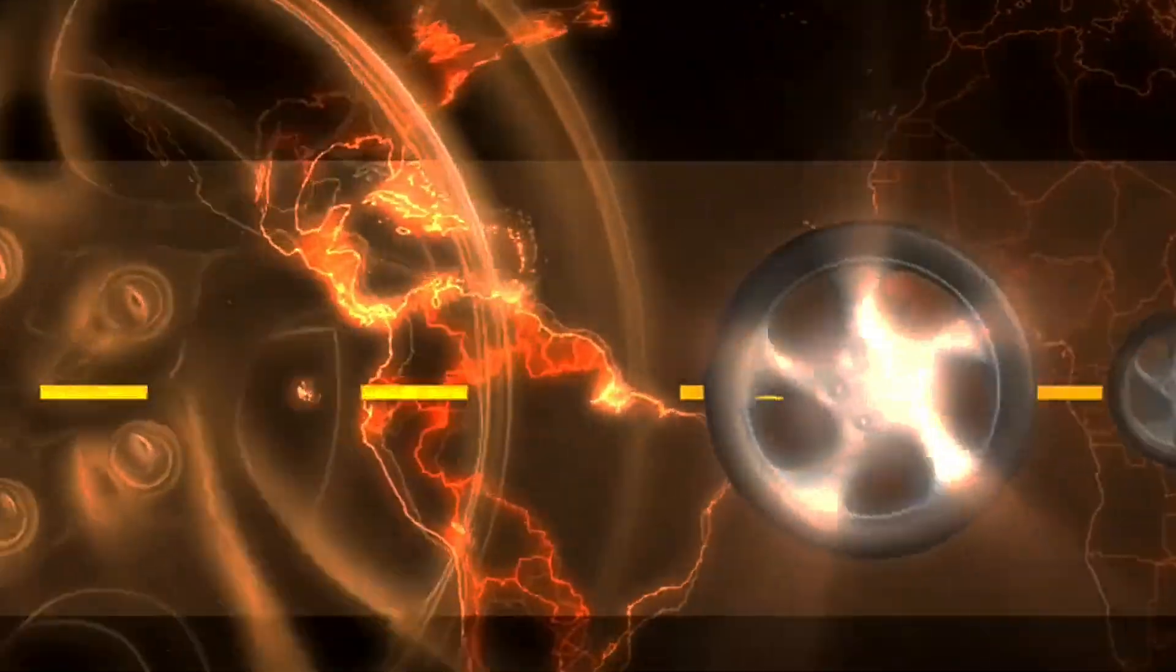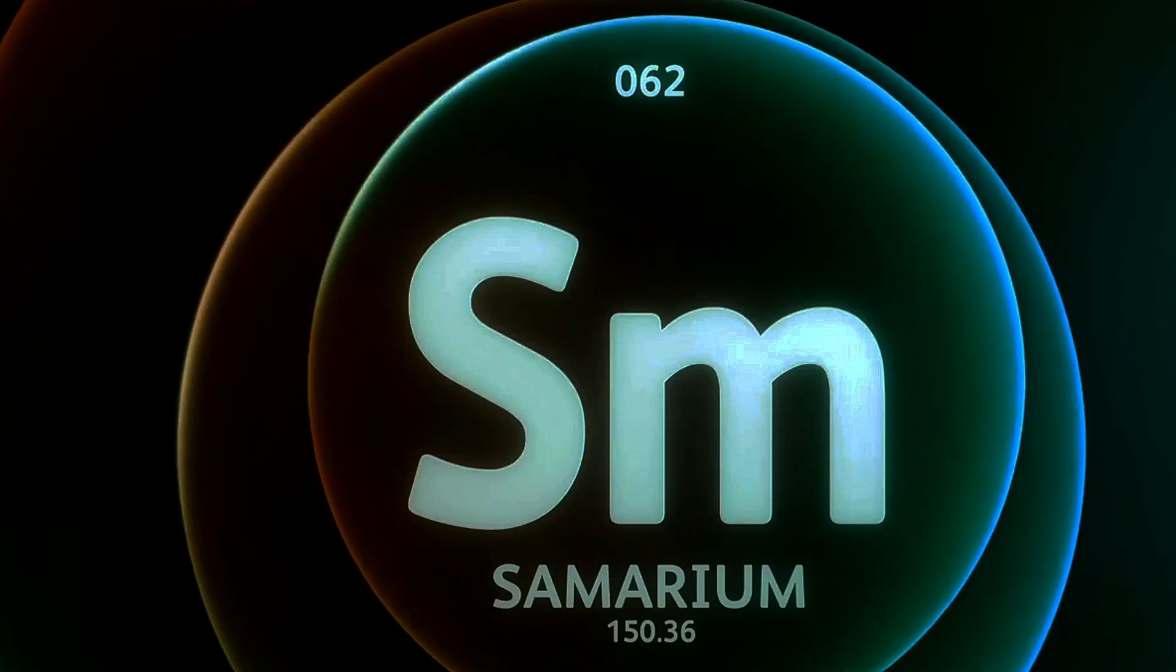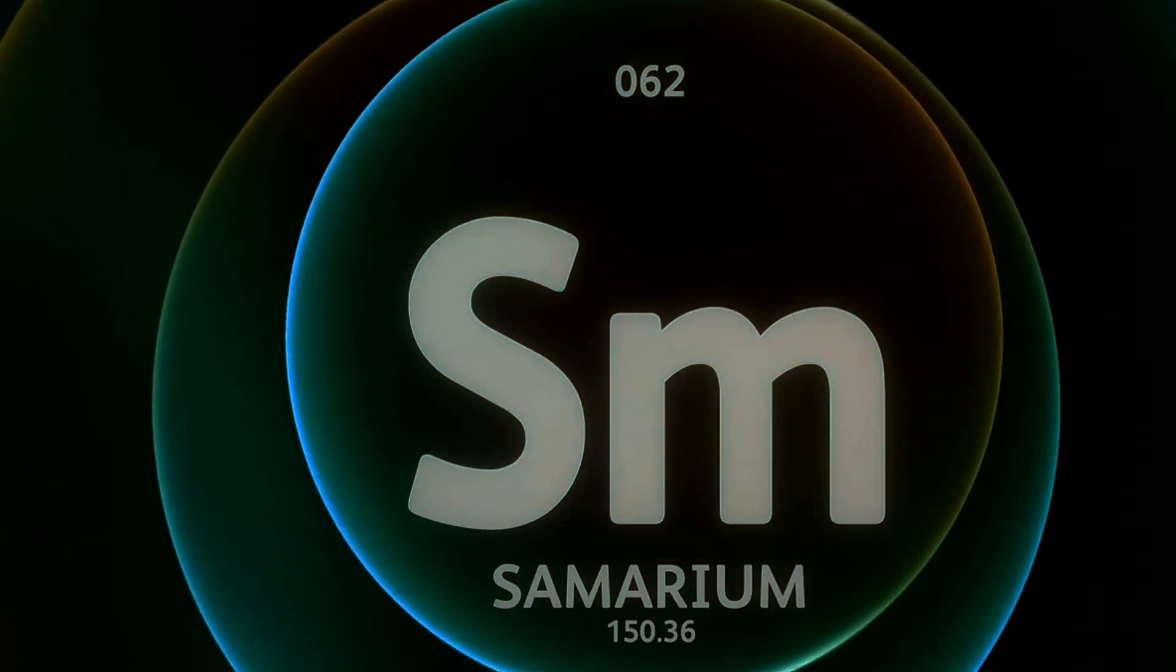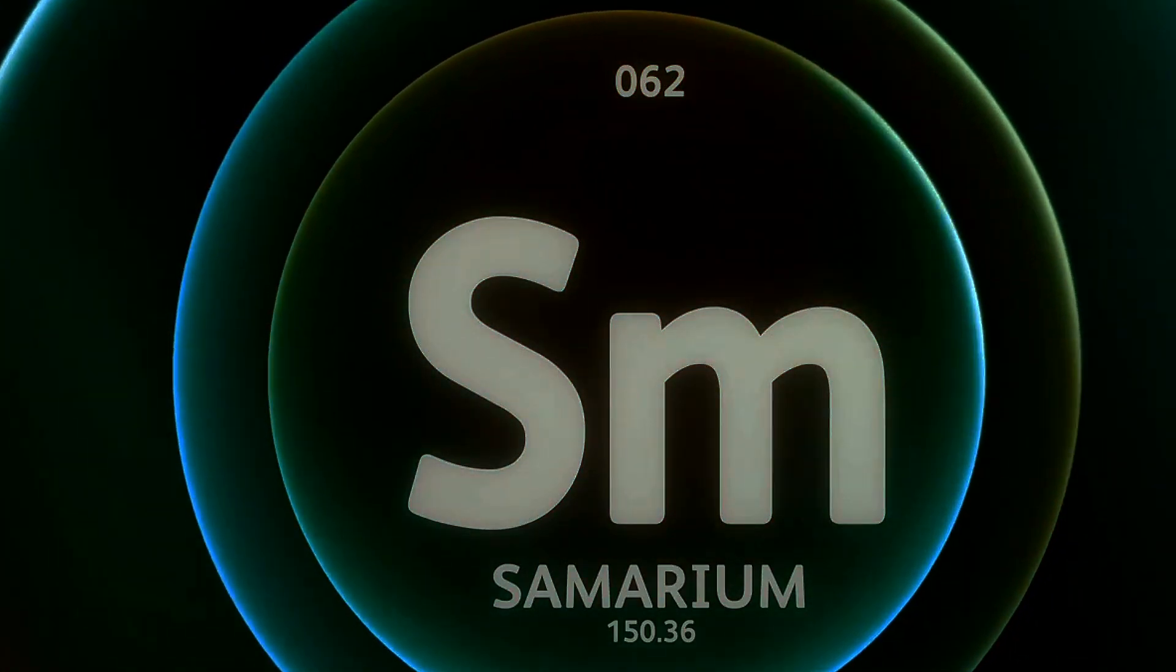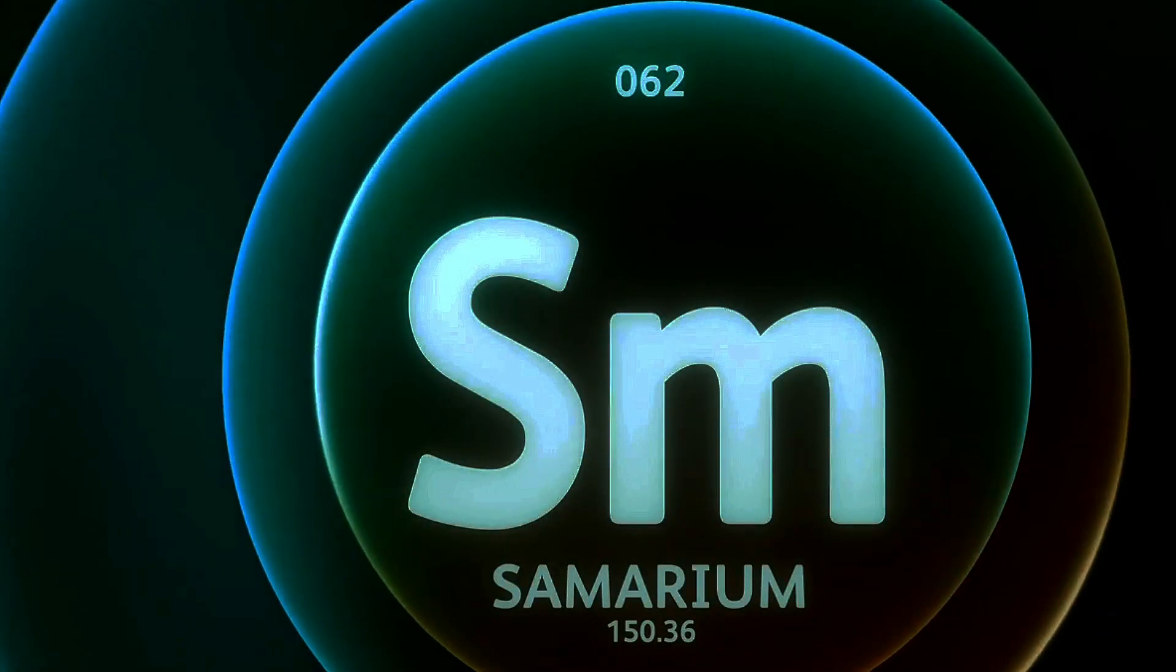We now know that cannot be true for one simple reason. Everyone, everywhere and every when, always agrees that the speed of light in a vacuum, c, is the same universal constant, 299,792,458 meters per second.